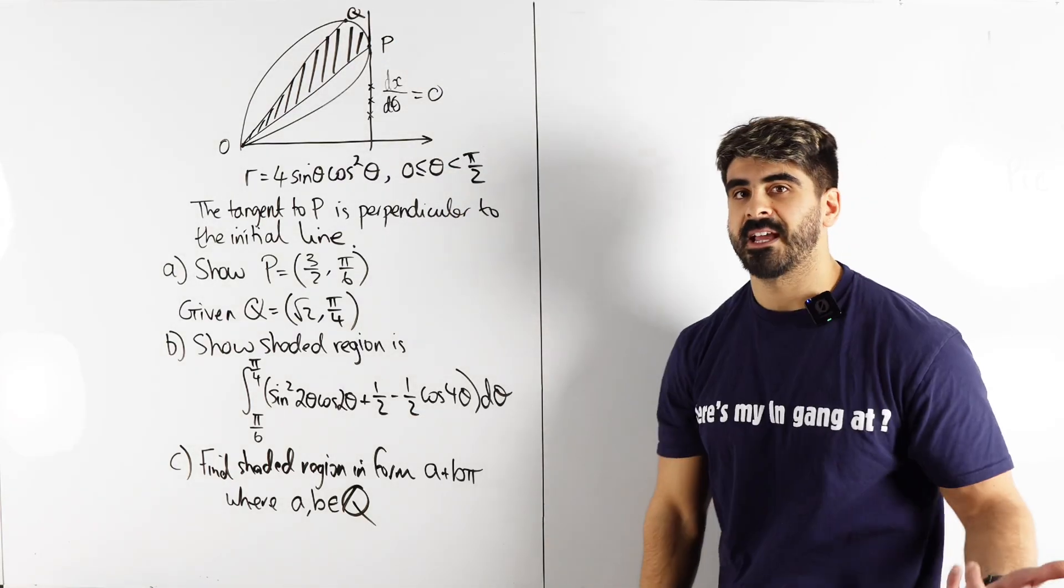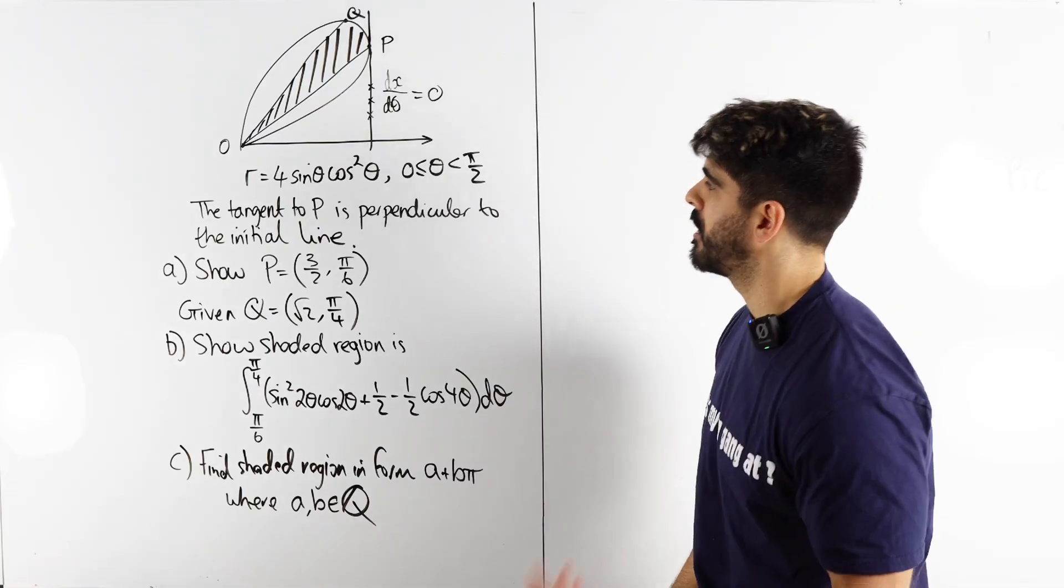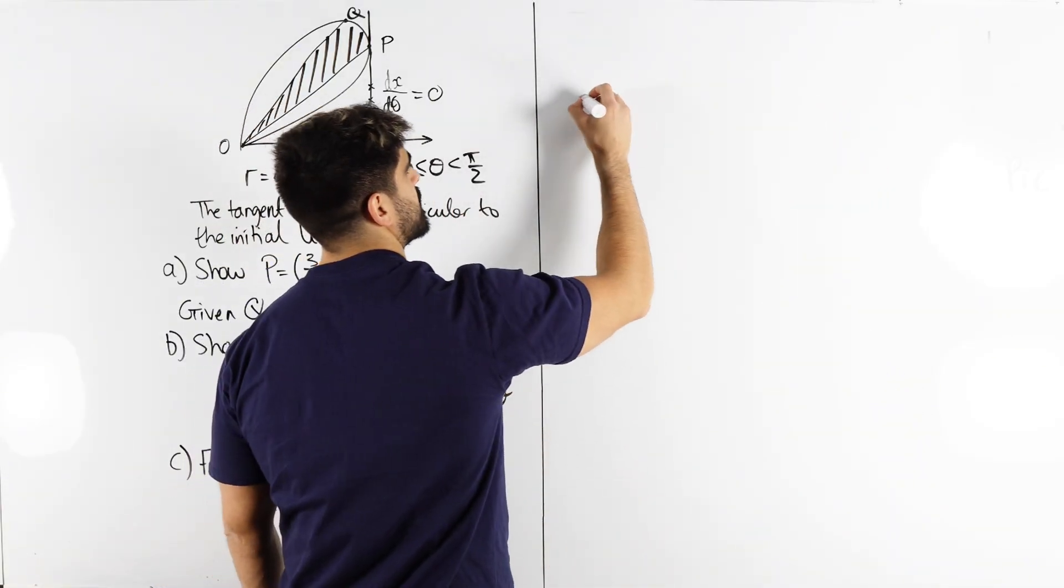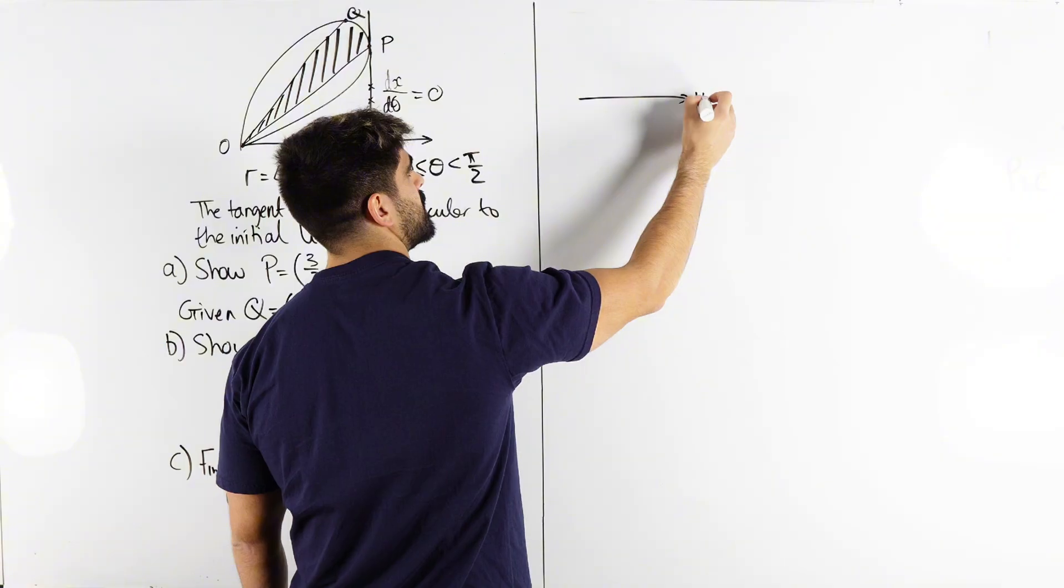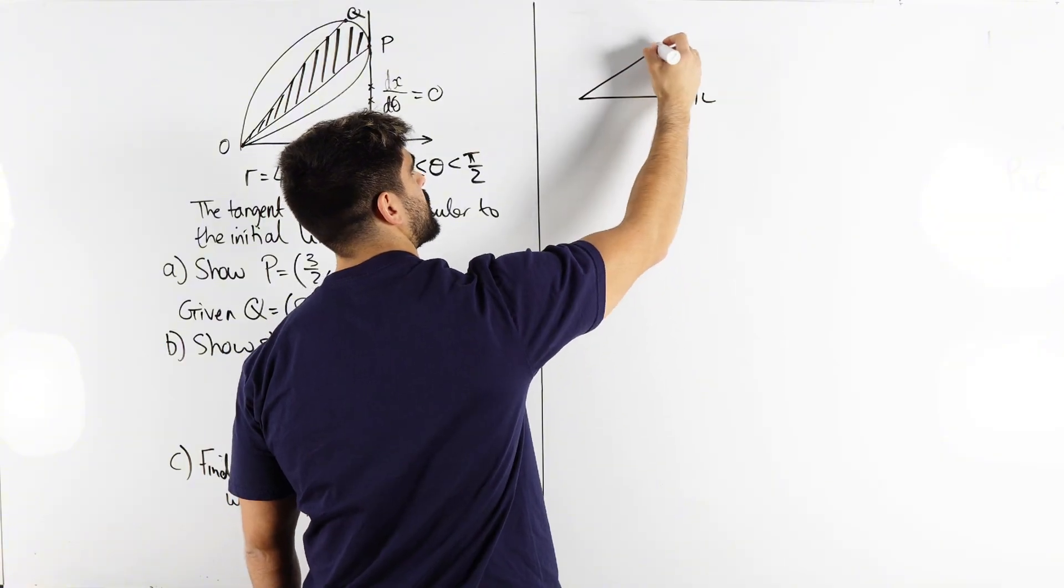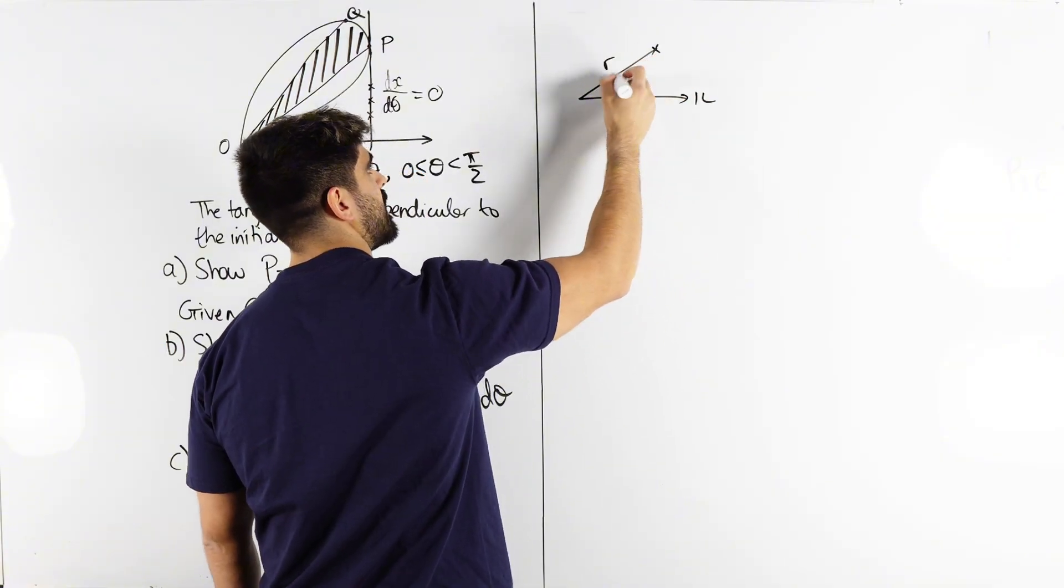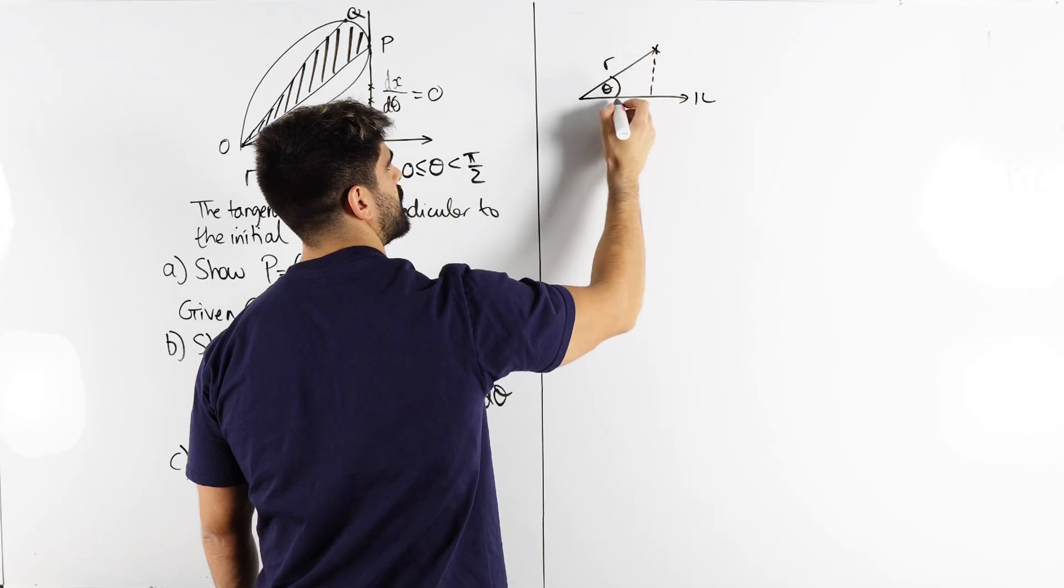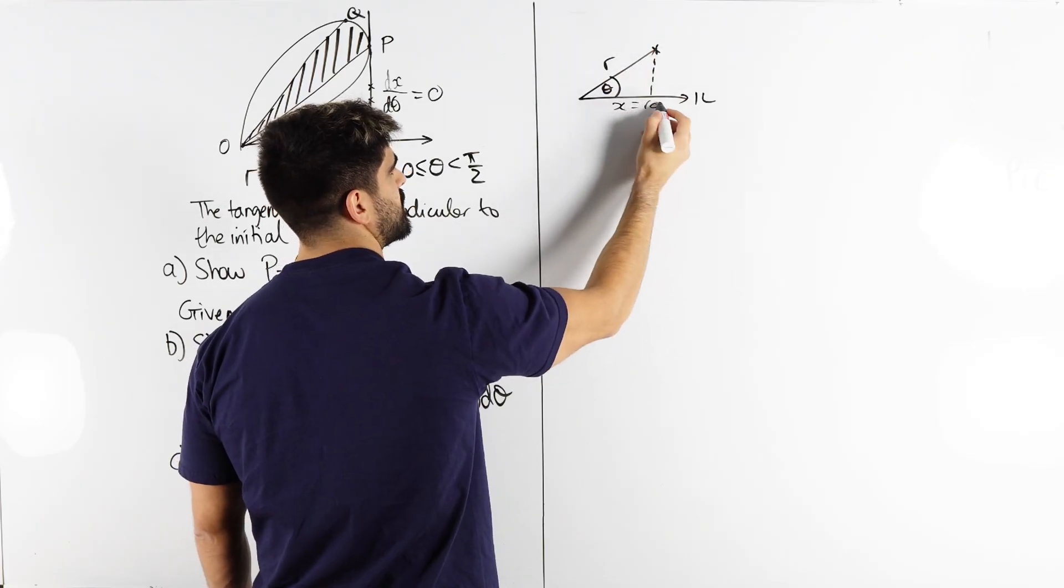But what is x generally when we deal with polars? Well remember how we describe things in polar form, so there's your initial line, here's a coordinate with some radius and theta. This x is r cos theta.